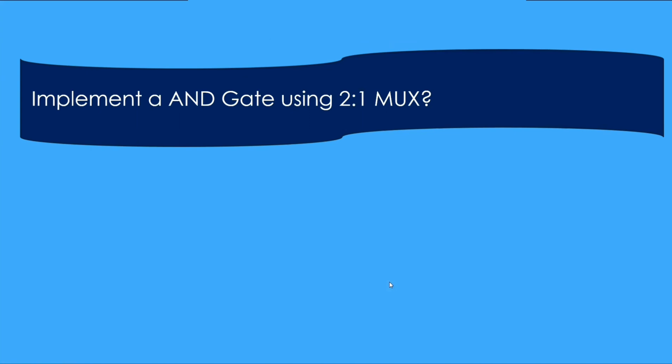Implement an AND gate using 2:1 mux. As you know, mux are digital building blocks. Any logic can be implemented from a mux.